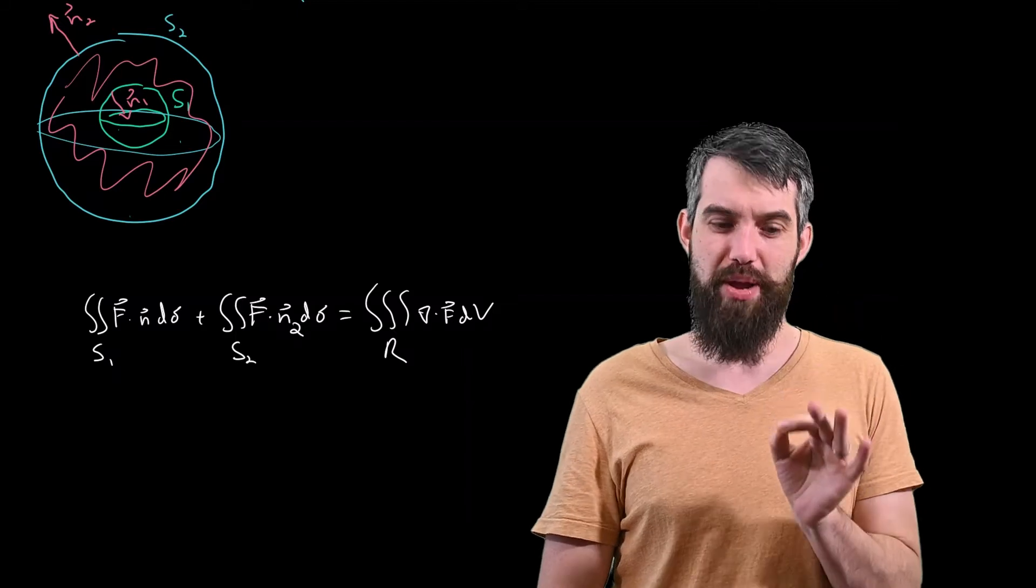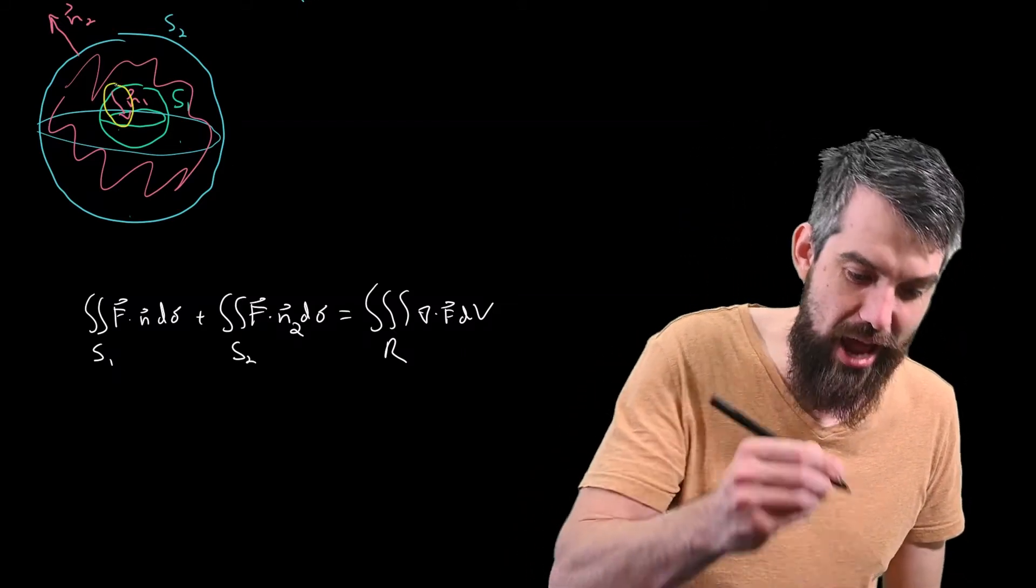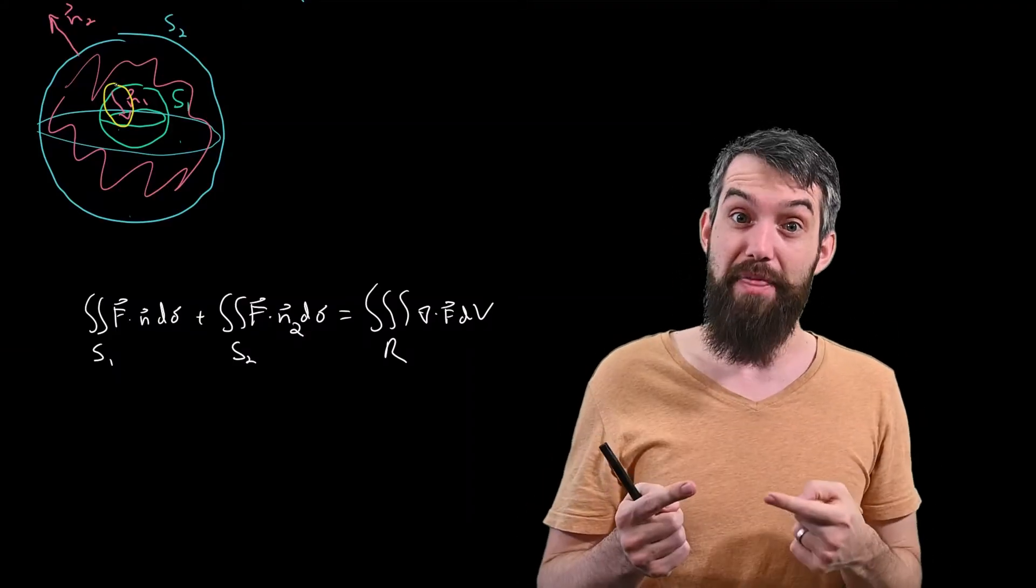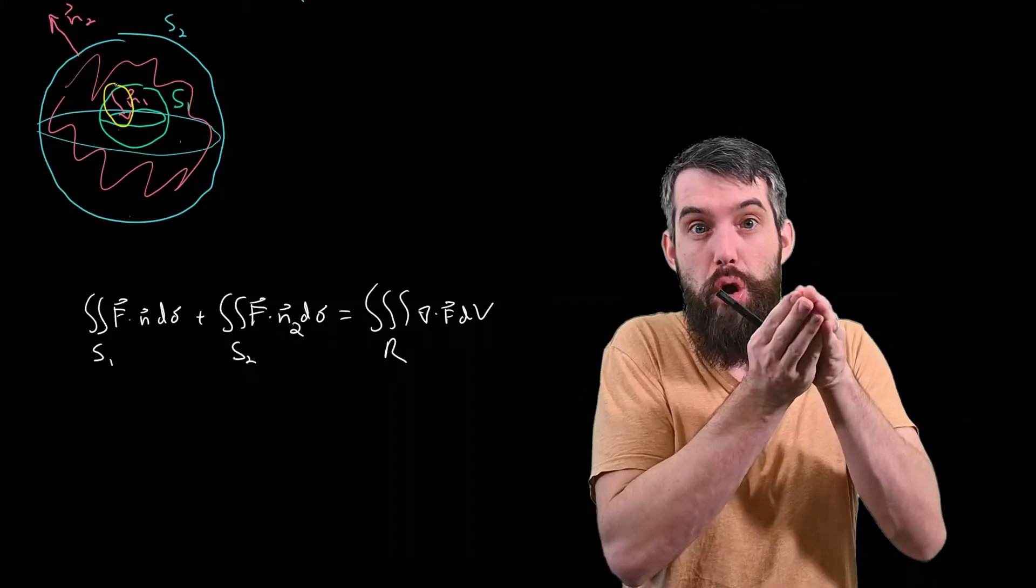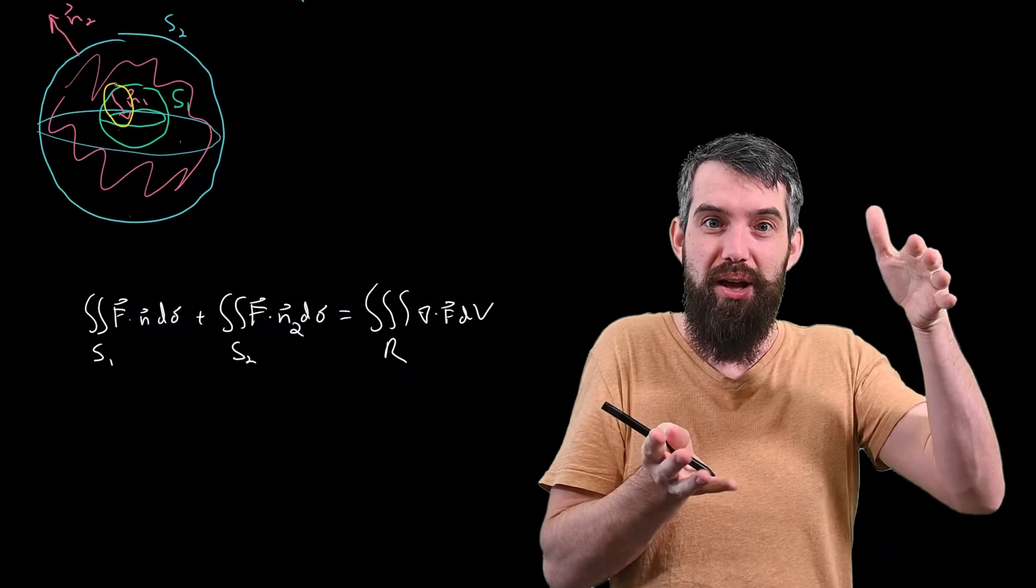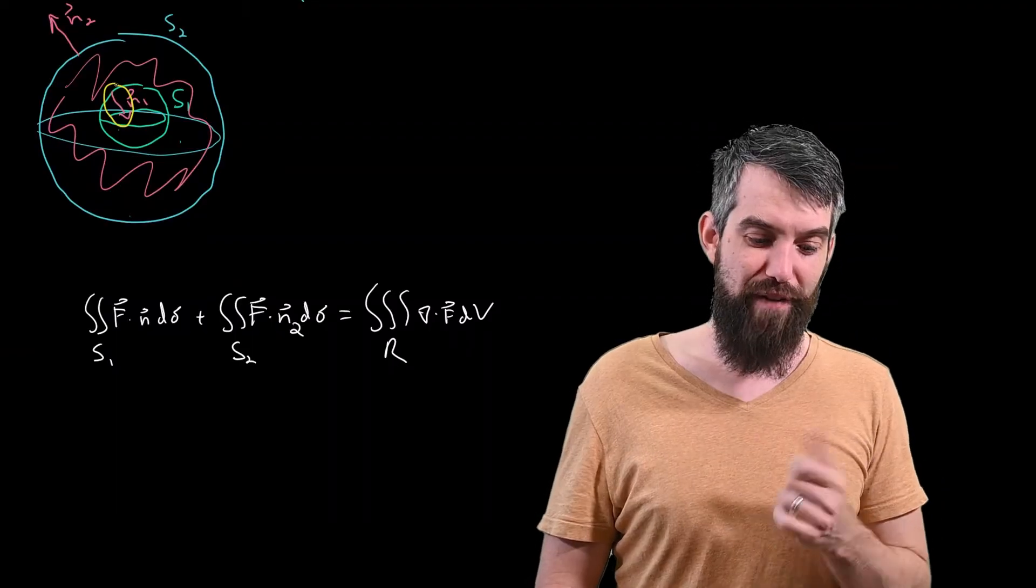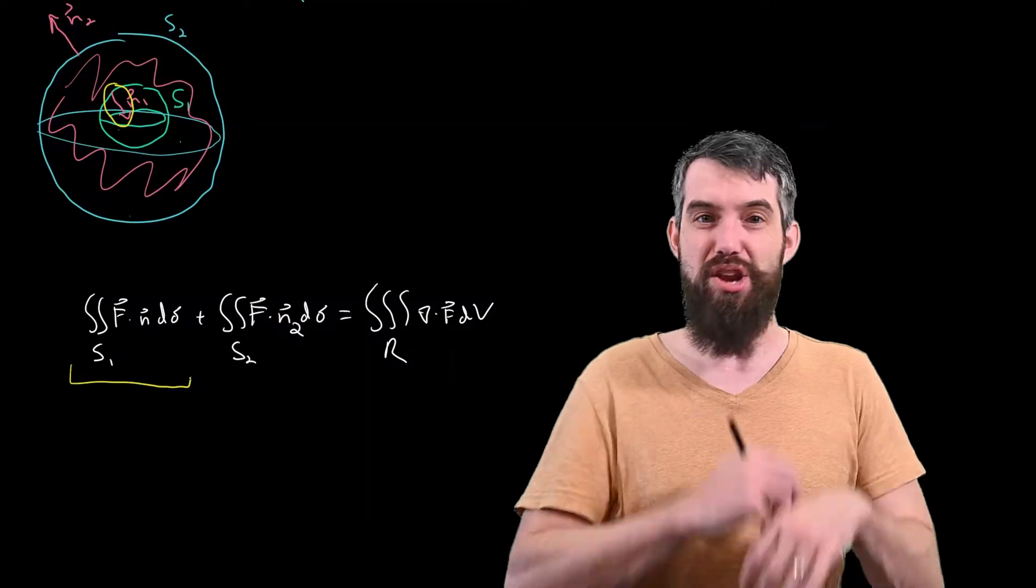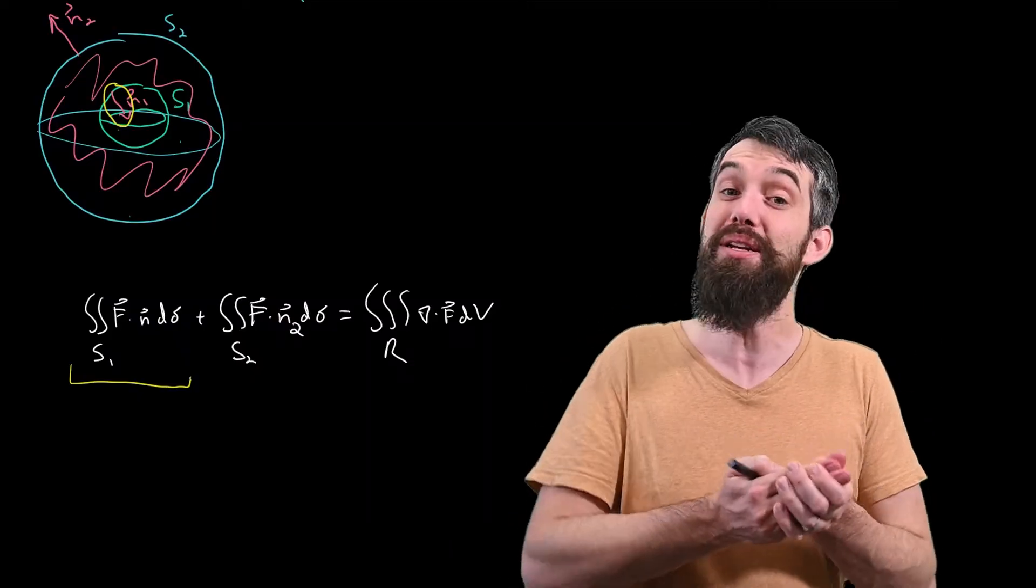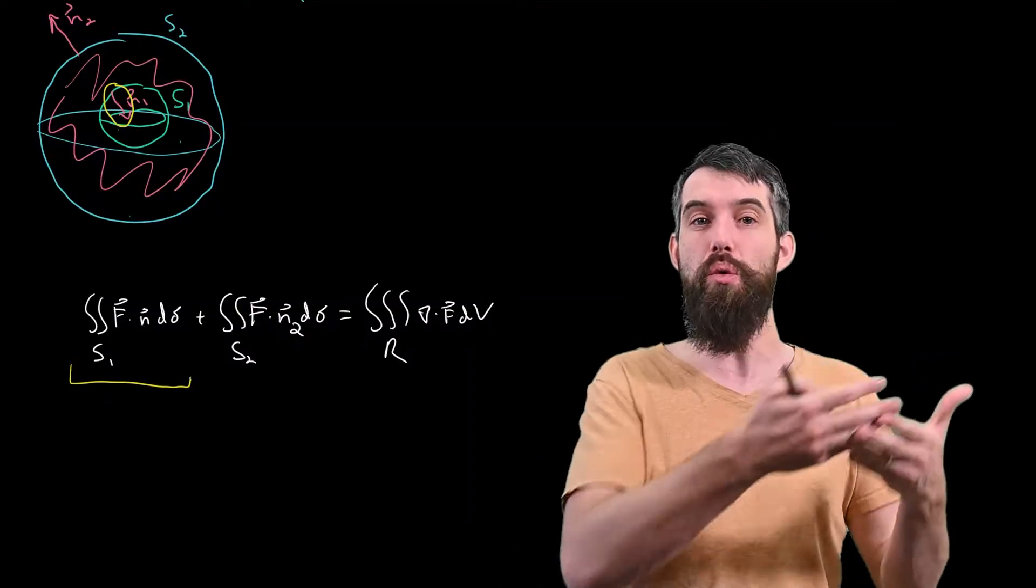And the N1 is a bit weirder here, because if you'll recall, we had come along and written the N1 pointing inwards. And the reason we had done that was because, from the perspective of the region in between these two spheres, if you go out from that region, on the inner surface, it means it's pointing down inwards towards the origin. But if I were just to do this left surface integral over here, and I didn't know anything about the region that was being contained, I would say the outward flux for the inner sphere would be pointing in the opposite direction. It would be pointing outwards.